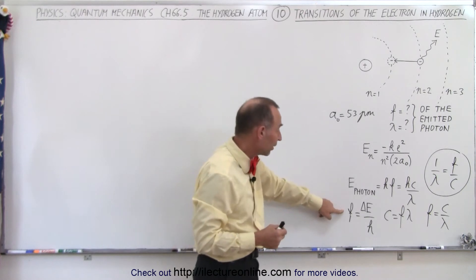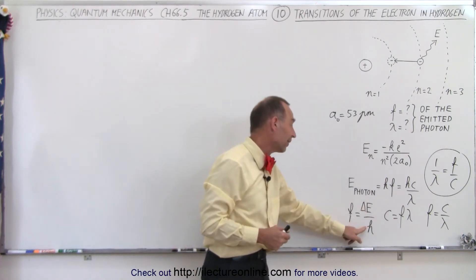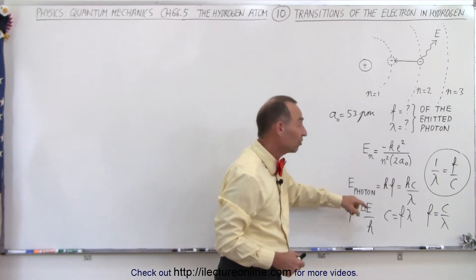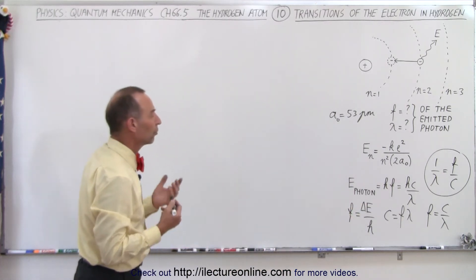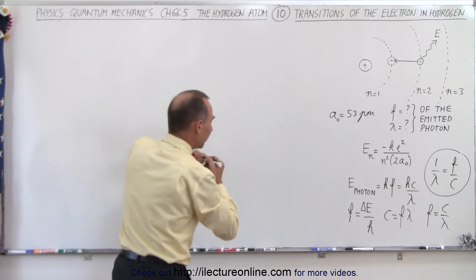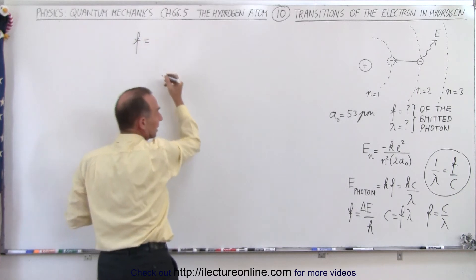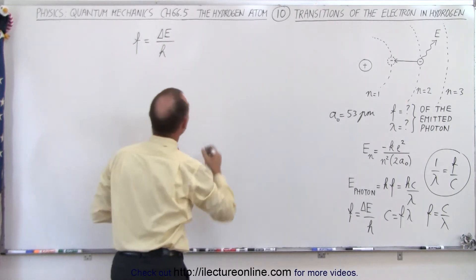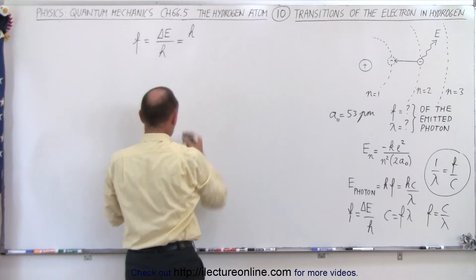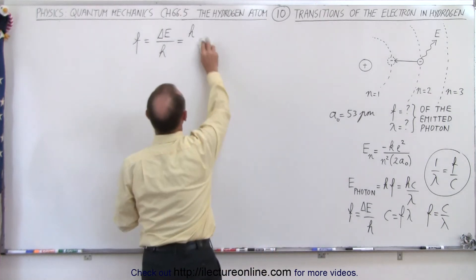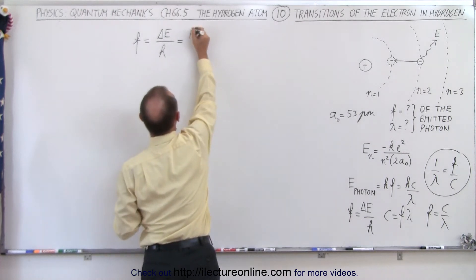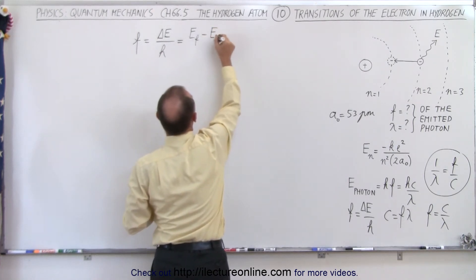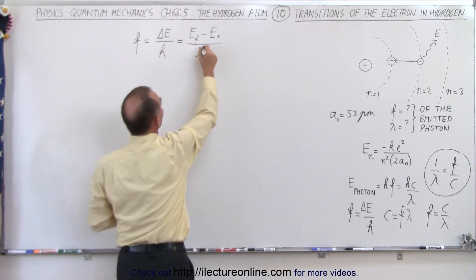The frequency of the photon is going to be equal to the difference in the energy levels, delta E, divided by h — since frequency can be written as E over h, and here E is the difference in the energy levels. So the frequency of the photon given off equals the difference in energy between the two levels divided by h, which means it equals the final energy — the energy of the orbit where the electron ends up — minus the energy of the orbit where the electron came from, divided by h.